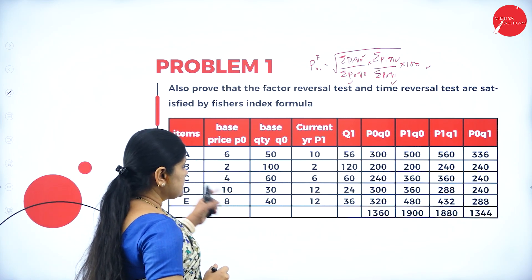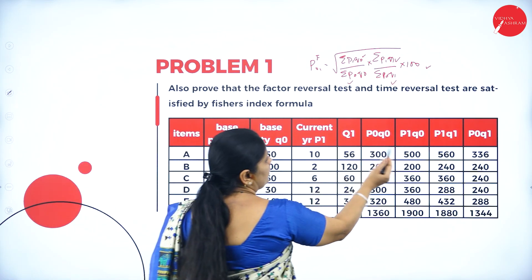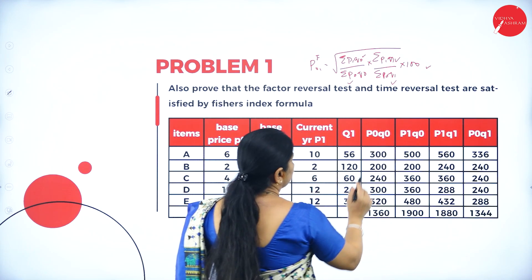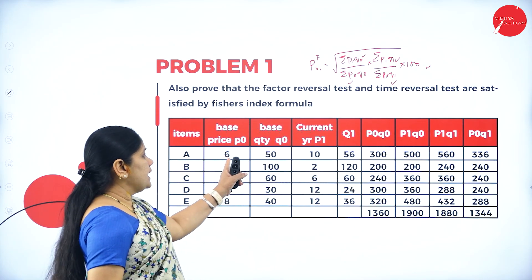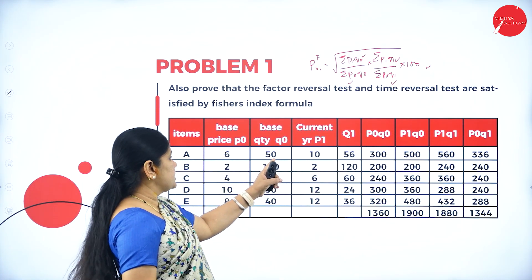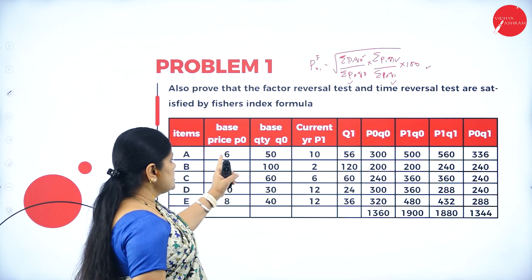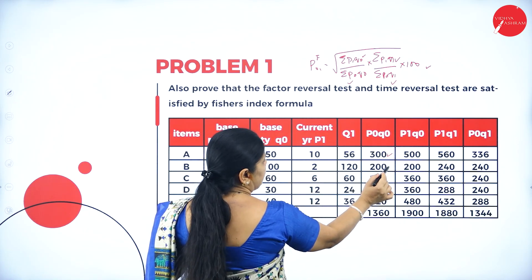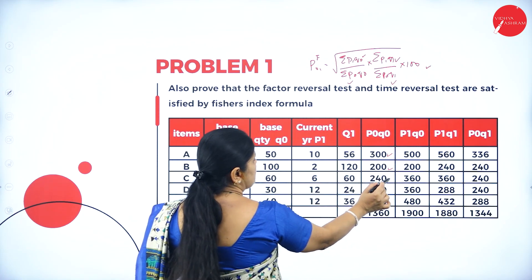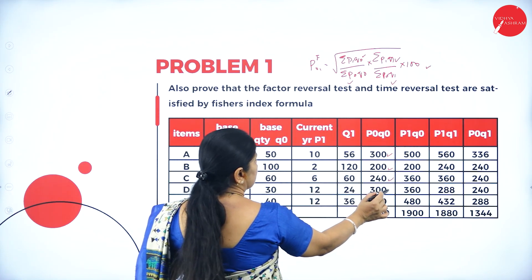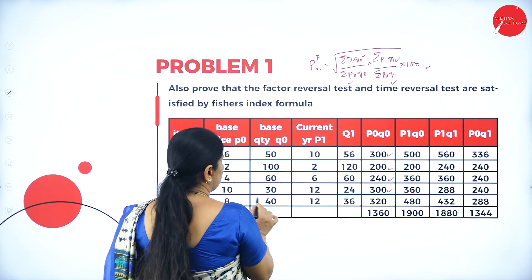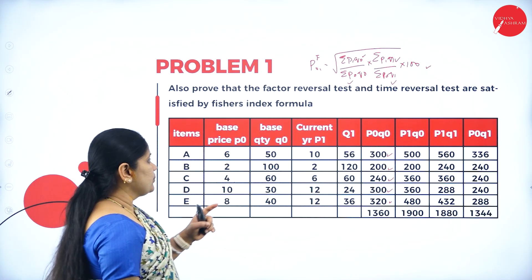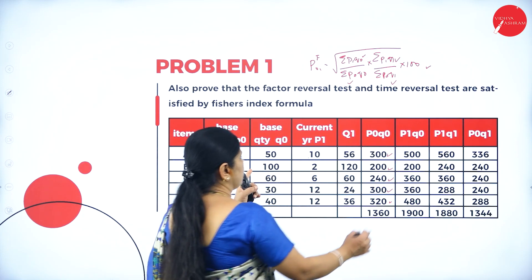In the table, we calculate P0Q0 — price multiplied by quantity of the base year. So: 6×50 = 300, 2×100 = 200, 4×60 = 240, 10×30 = 300, 8×40 = 320.